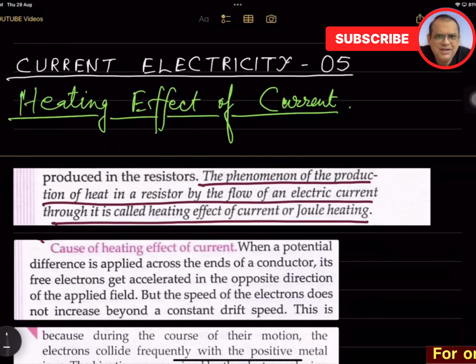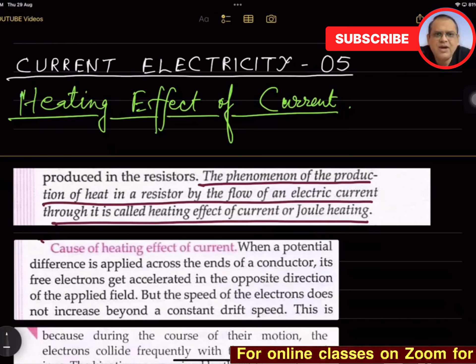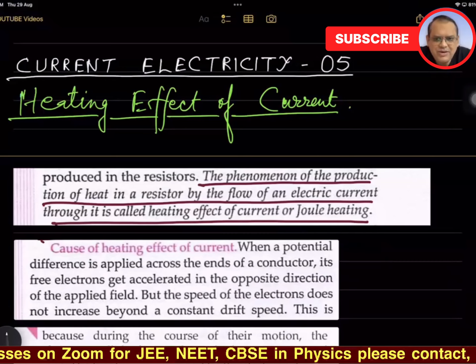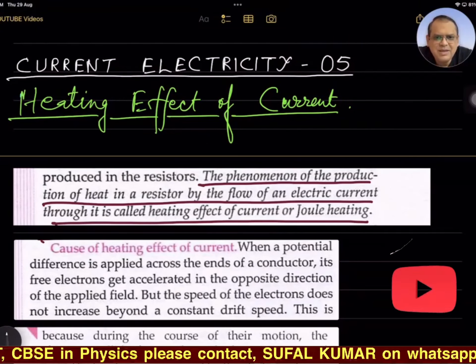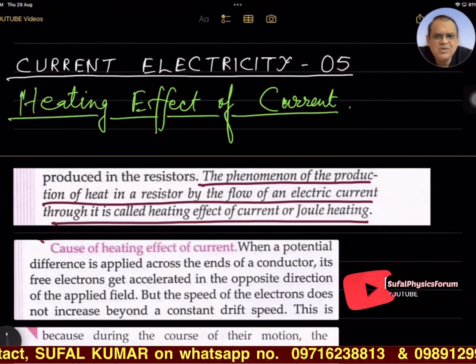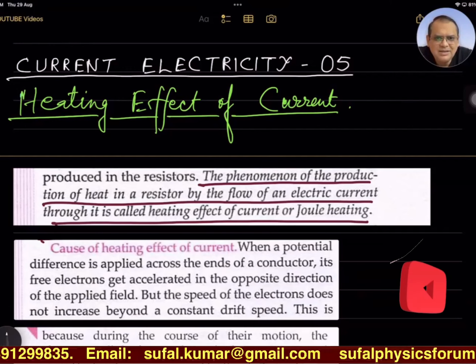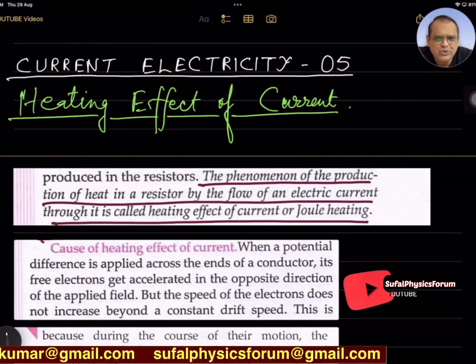Starting current electricity fifth part with heating effect of current. When current is passed across any resistor, some heat is dissipated because of the obstruction posed by the resistor. This phenomenon is called Joule heating.